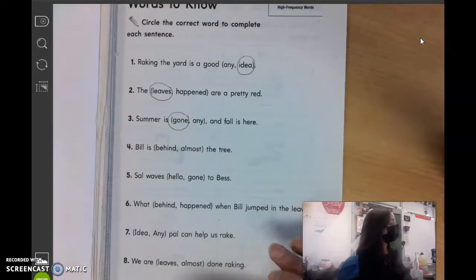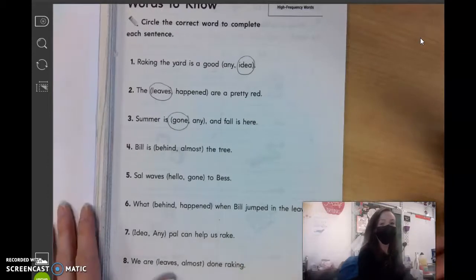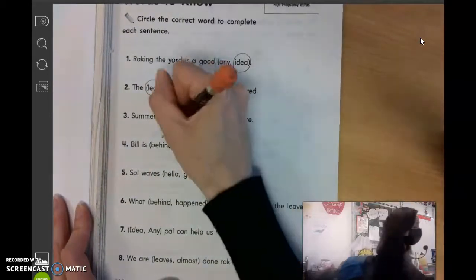Number four, Bill is blank the tree. Howlong? Behind the tree.